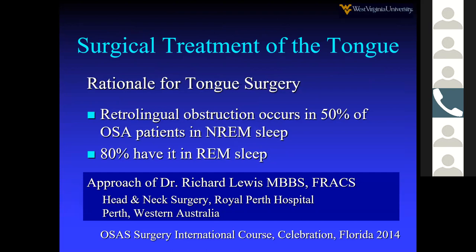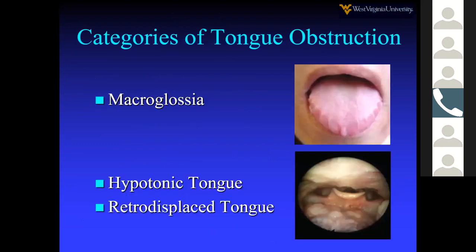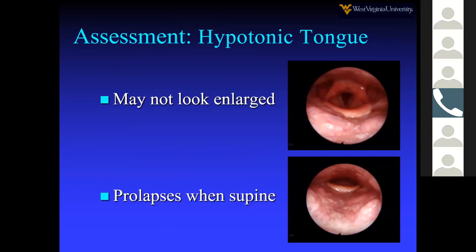We treat the tongue because 50% of OSA patients have tongue-based obstruction in non-REM sleep, and 80% have it in REM sleep. Richard Lewis from Australia categorized tongue obstruction as: macroglossia (big tongue), hypotonic tongue that falls back in the supine position, and retro-displaced tongue that is sitting back regardless of position. The tongue may not look enlarged upright, but when the patient is placed supine, it falls back and obstructs.